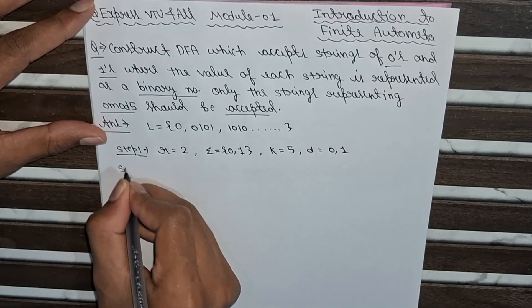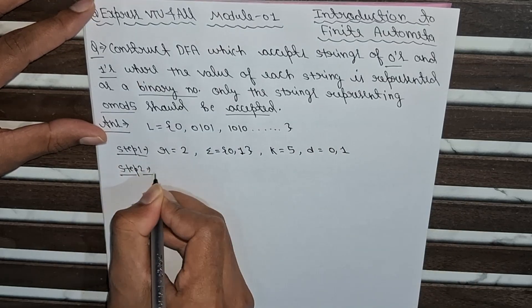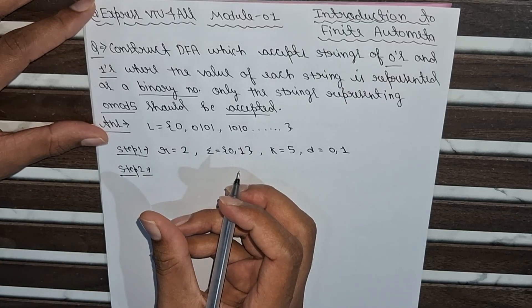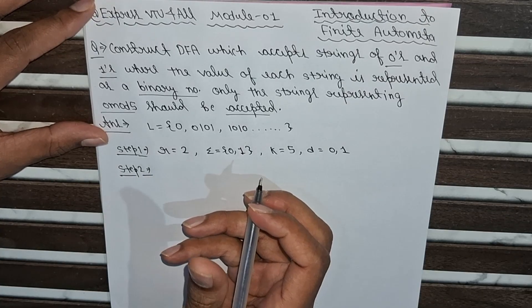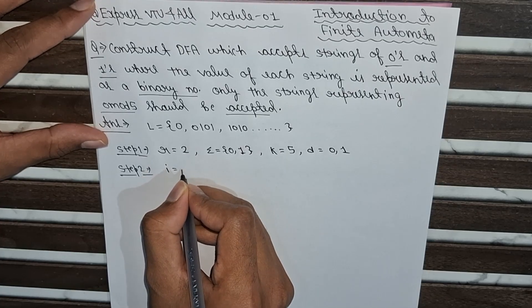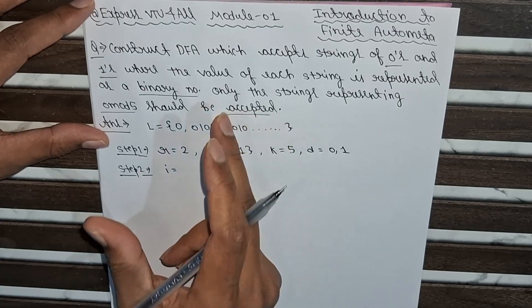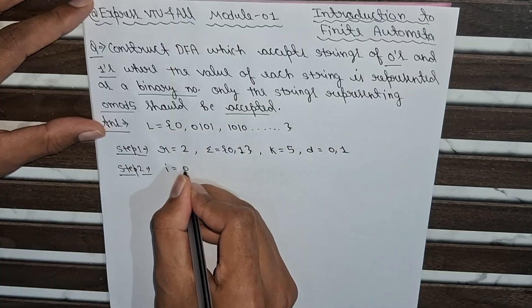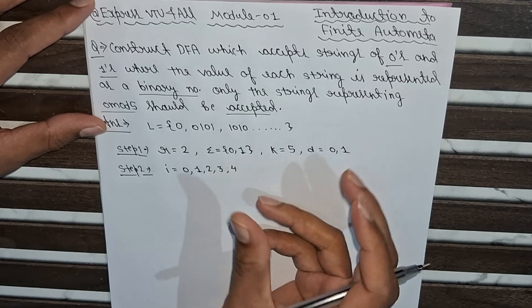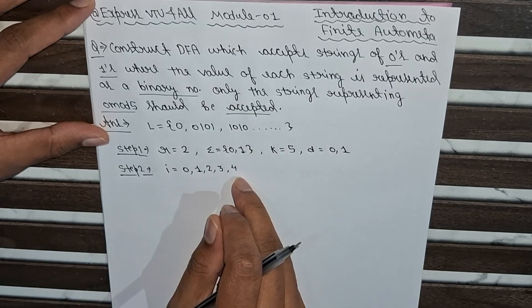Step 2 is to compute the possible remainders. The remainders represent the states of the DFA. When we divide any number by 5, the remainders will be 0, 1, 2, 3, and 4.